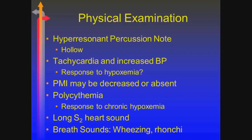Continuing on the physical exam: on percussion you would see hyperresonance. They're probably tachycardic, most likely a response to hypoxemia. PMI — point of maximal impulse — will be reduced simply because of the air trapping. These folks are probably polycythemic: it's the body's response to chronic hypoxemia, erythropoietin is released and you end up with more erythrocytes. They have a long S2, and there will be a lot of adventitious breath sounds.